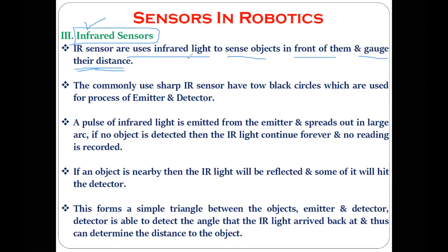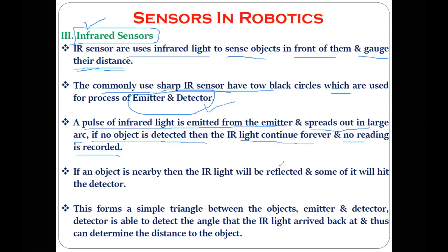Infrared sensors are used in temperature measurement and remote controls. The infrared sensor uses infrared light to sense the object in front of it and gauge the distance. These infrared sensors commonly have two components referred to as the emitter and the detector. A pulse of infrared light is emitted from the emitter and spreads out in a large arc.